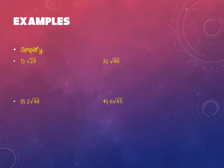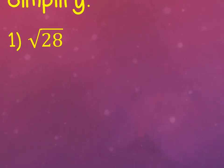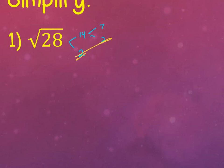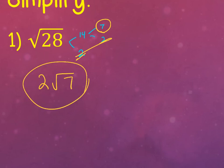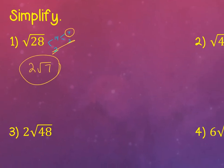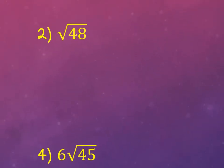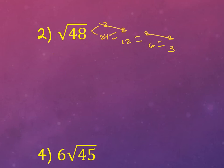Number 1: square root of 28. I break that 28 apart — 14 times 2, then 7 and 2. Those are all primes. There are two 2s, which means one 2 goes to the outside; the 7 doesn't have a match so it stays underneath. Number 2: how many of you broke it down into 2 and 24, then 2 and 12, then 2 and 6, then 2 and 3? There are two 2s — so one 2 comes out, then the second 2 comes out, and the 3 stays underneath. That's 4 square root 3. Another way: 48 is 16 times 3; the square root of 16 is 4. Just be really careful and make sure you're comfortable with your square roots if you do it that way — both are right.